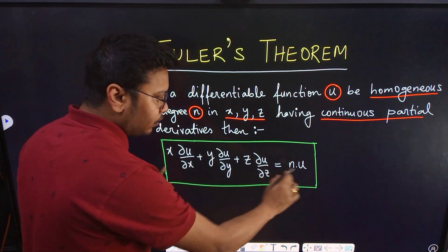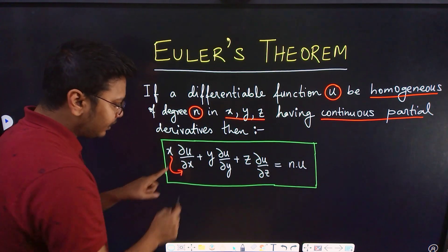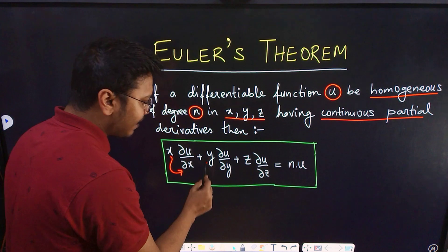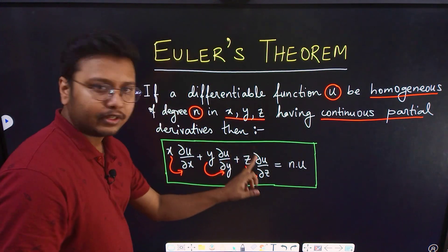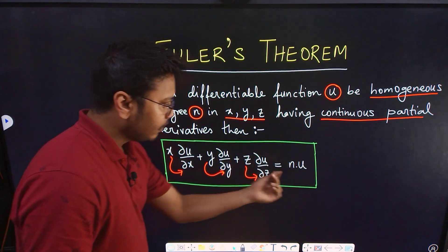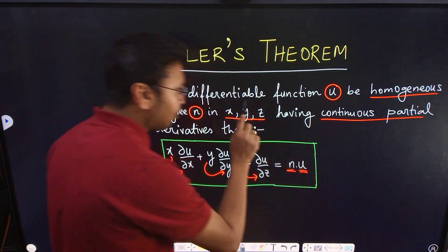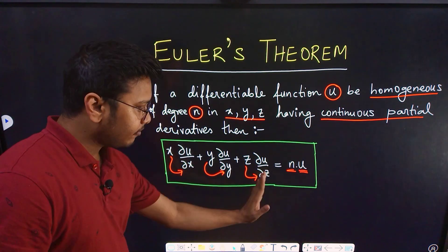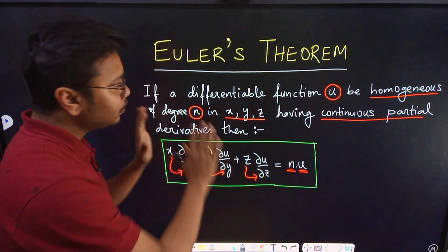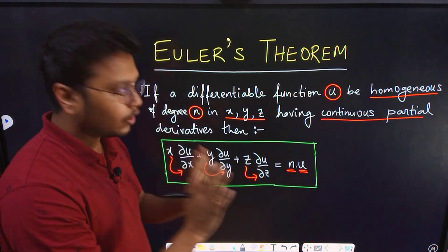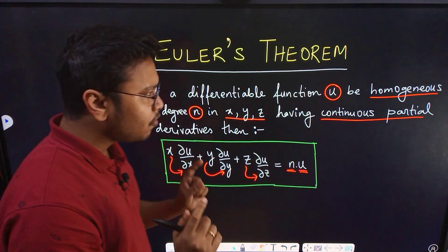The structure of the equation is: x multiplied with the partial derivative of u with respect to x, plus y multiplied with the partial derivative of u with respect to y, plus z multiplied with the partial derivative of u with respect to z, equals n times the original function u. This statement is called Euler's theorem.